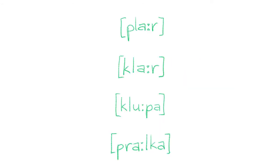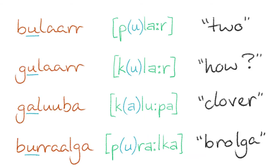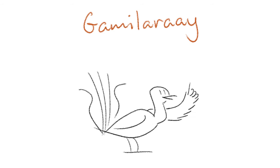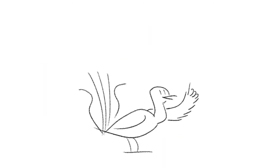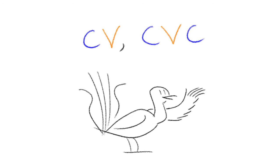Gamilarai does not phonemically allow consonant clusters; however certain unstressed vowels may be elided, giving the impression of consonant clusters. Stress typically falls on the first syllable of a word, but long vowels are usually stressed as well, which may lead to stress falling on the second syllable should the first vowel be a short one. Gamilarai has a very CV or CVC syllable structure.